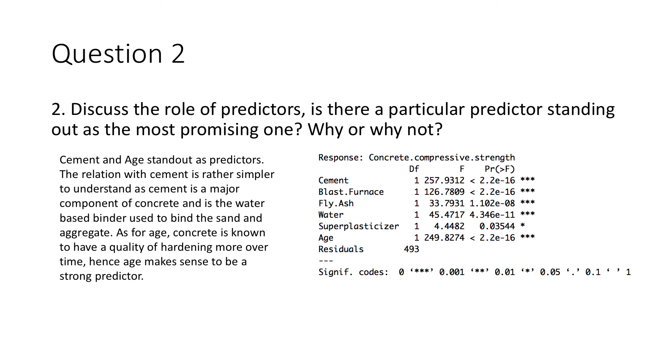As for age, upon further research, I learned that concrete actually hardens over time, and it does not stop hardening from the day it's made. The longer concrete exists, the harder it gets, so it makes sense that these two were the predictors that stood out. Blast furnace did have a higher F ratio value as well, but not as much as age and cement, so I only used cement and age as the answer for this one.